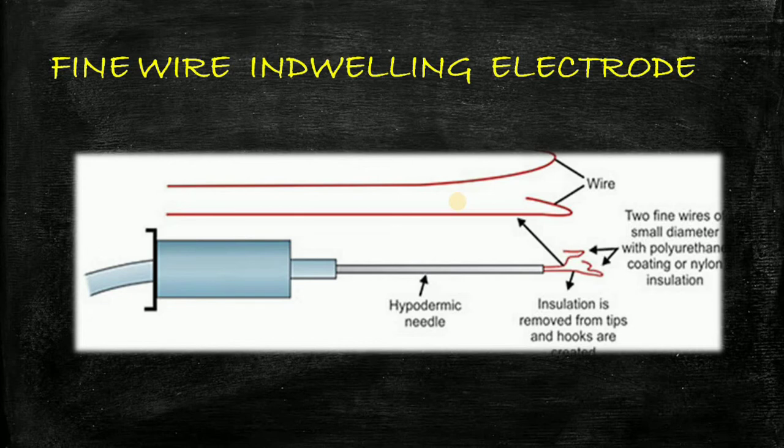Next is fine wire indwelling electrode. They are used for kinesiological study of the small and the deep muscles. It is made by using two fine wires of a small diameter with the polyurethane.